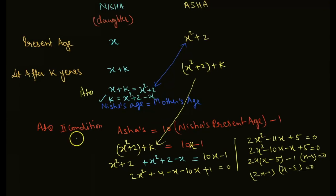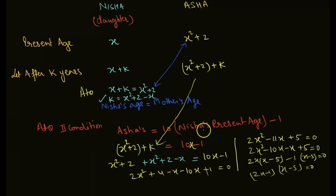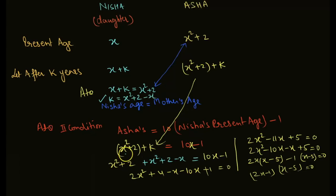According to the second condition, Nisha's age is equal to 10 times Nisha's present age minus 1. We find the K value from here.